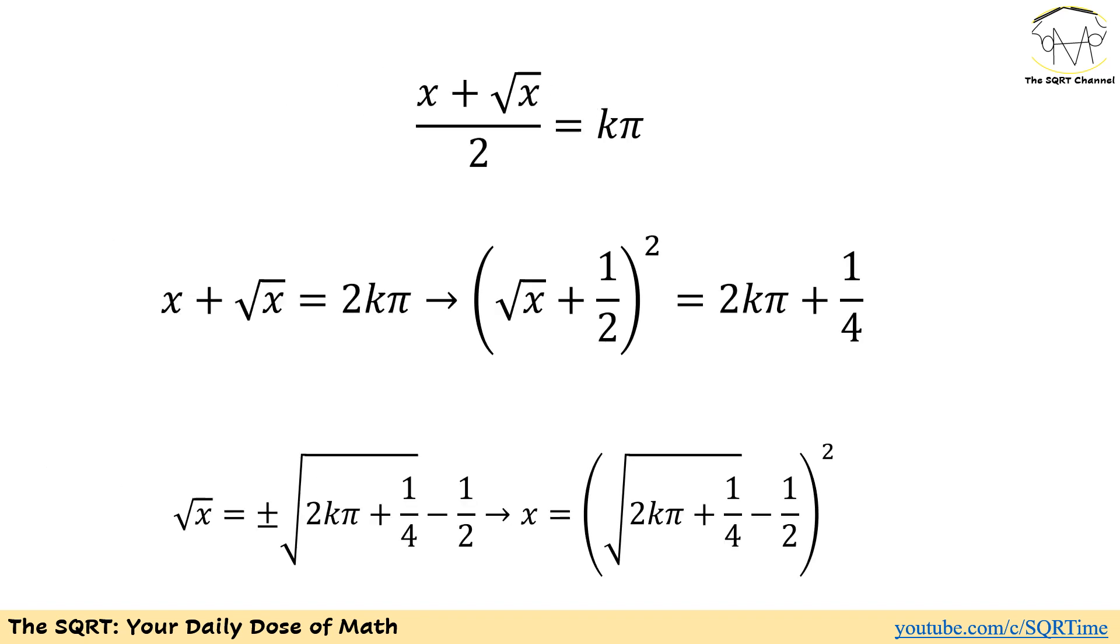Let's start with the first one. Then we are going to have x plus radical x is 2 times k times pi. I'm going to write x plus radical x as radical x plus 1 over 2 to the power of 2. This leads to x plus 1 over 4 plus radical x. We already have x plus radical x, so we need to take out 1 over 4. And then, if you apply some simplification, you are going to see that radical x needs to be plus minus radical 2k times pi plus 1 over 4 minus 1 over 2. And then x is going to be the power of 2 of this expression. That's one of the possible cases that we are going to face here.